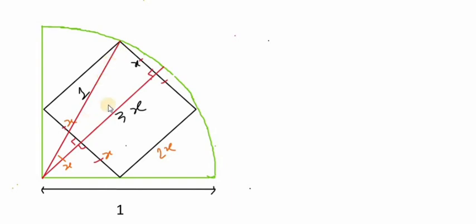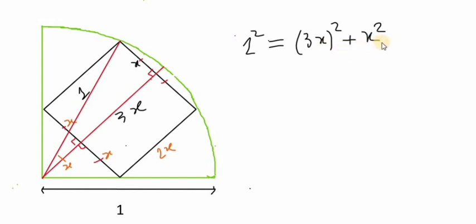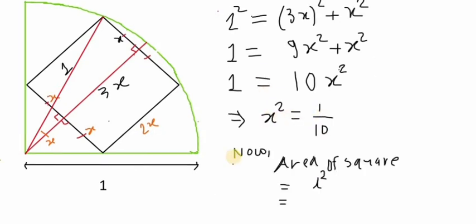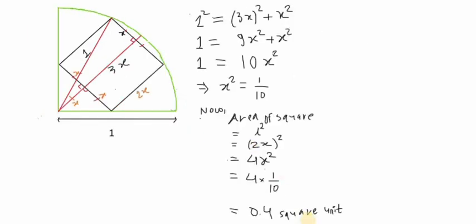Now we will use the Pythagorean theorem on this right-angle triangle: 1² = (3x)² + x². This gives 1 = 10x², so x² = 1/10. Now the area of the square equals (2x)² = 4x² = 4/10 = 0.4 square units, which is our required answer.